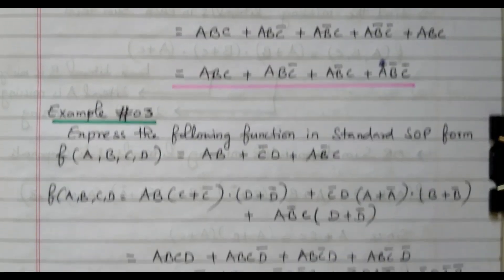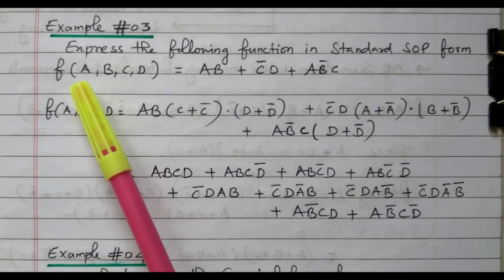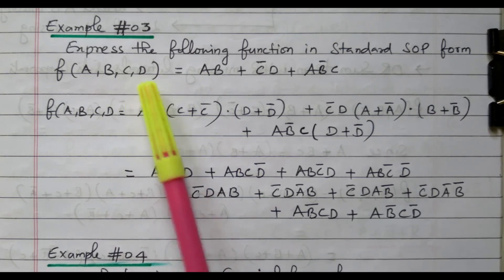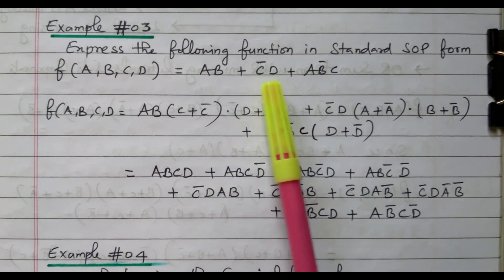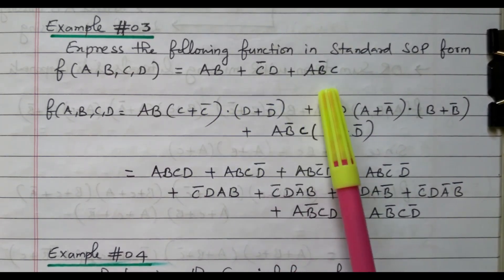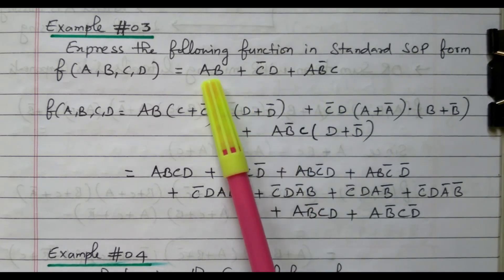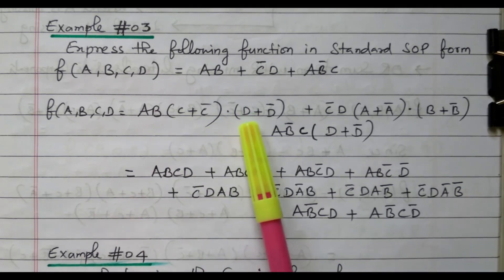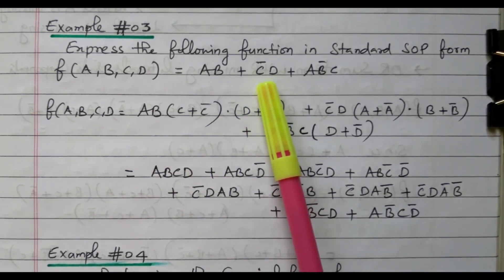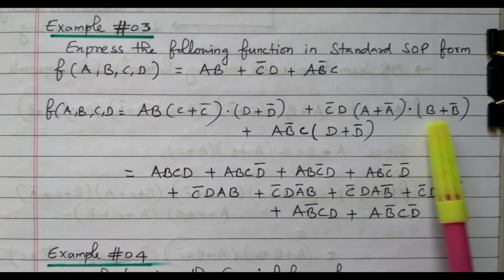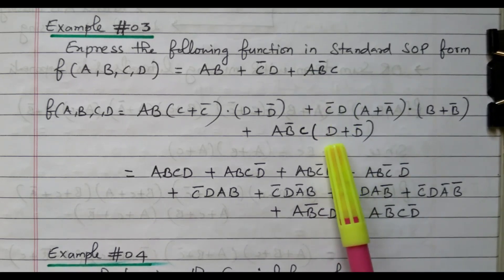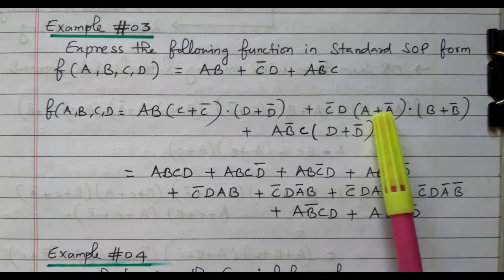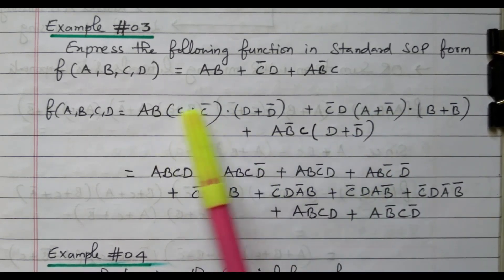Now we will go to one more example. F(A,B,C,D) — we need to convert into standard SOP form. There are four variables and three product terms: AB + C̄D + AB̄C. In the first term AB, C and D are missing, so it is multiplied with (C + C̄)(D + D̄). In the second term C̄D, A and B are missing, so it is multiplied with (A + Ā)(B + B̄). In the third term AB̄C, D is missing, so it is multiplied with (D + D̄).